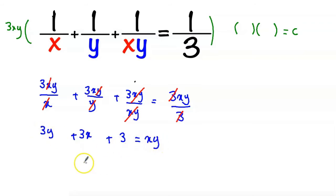And this equation is equivalent to xy minus 3x minus 3y equal to 3.